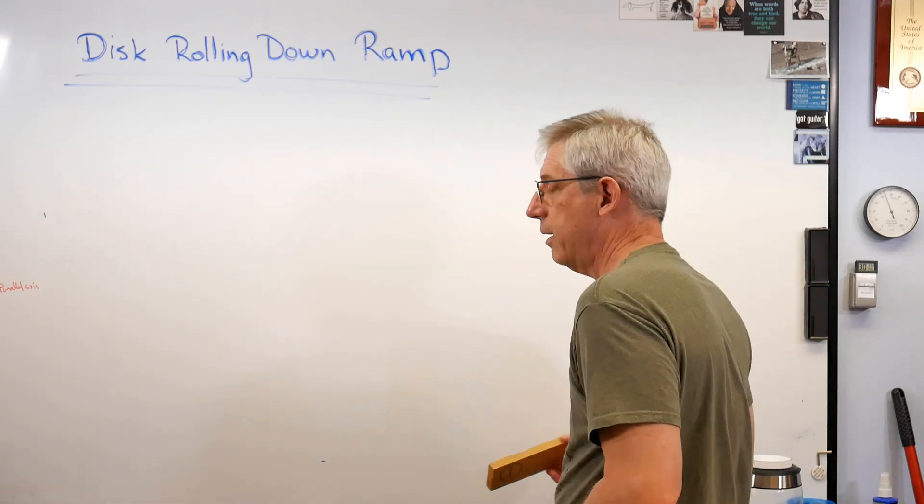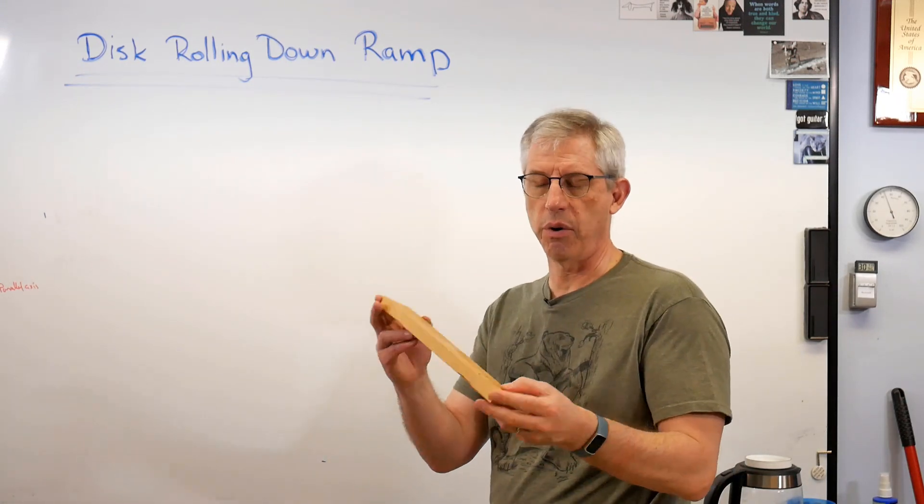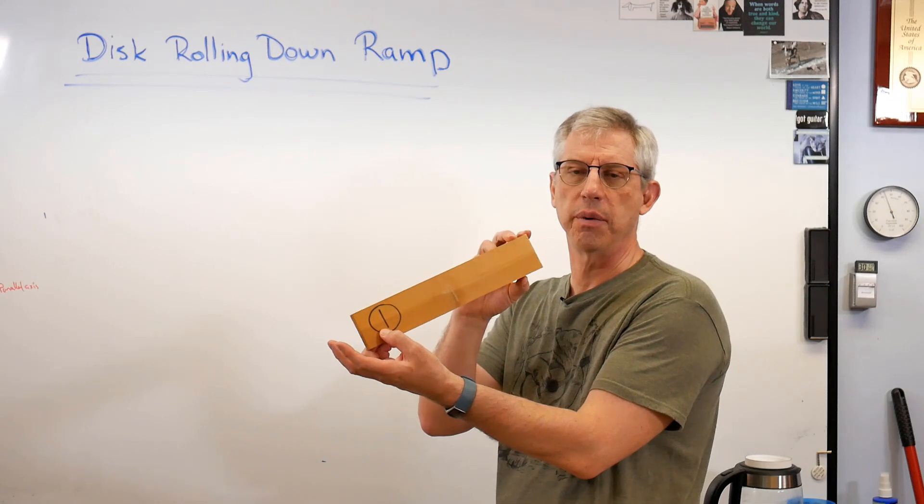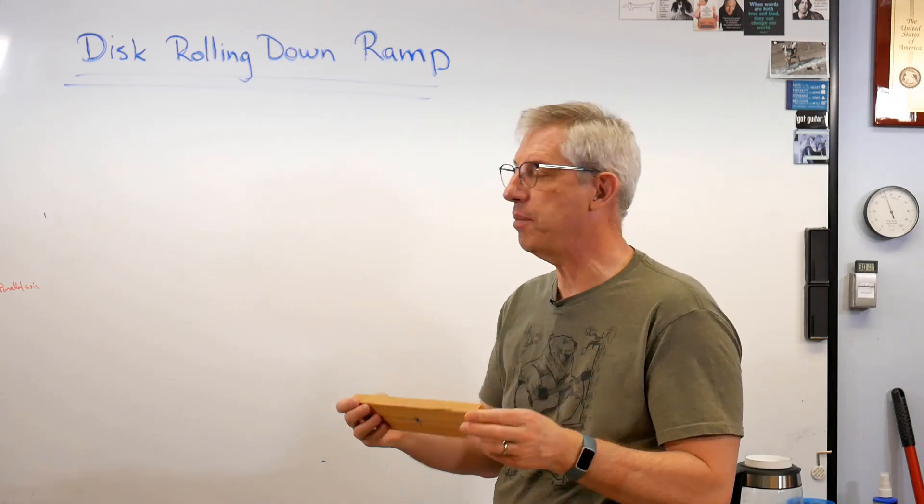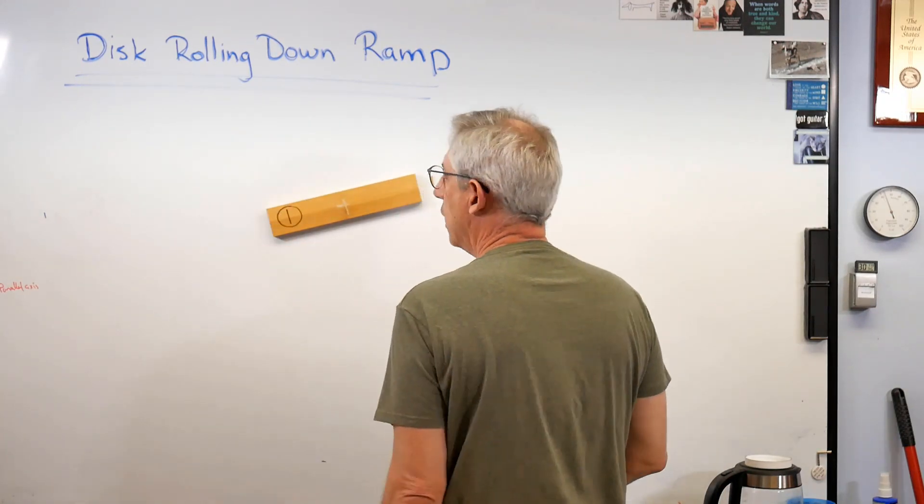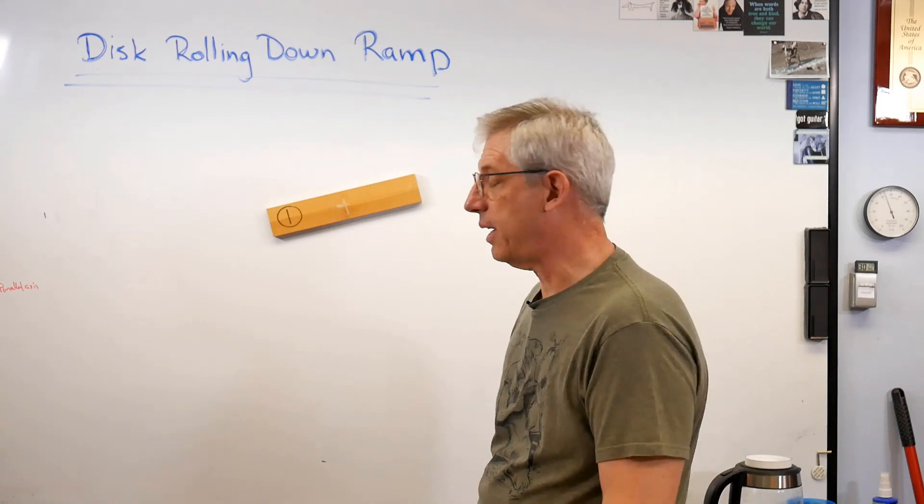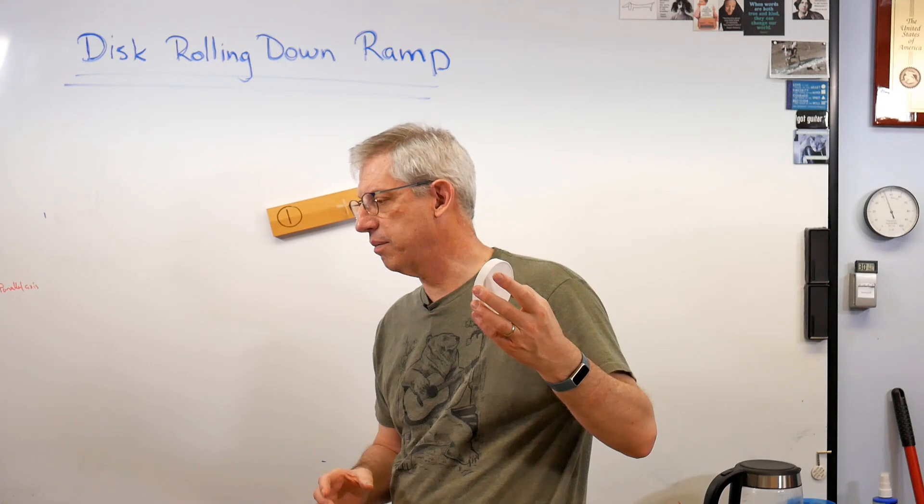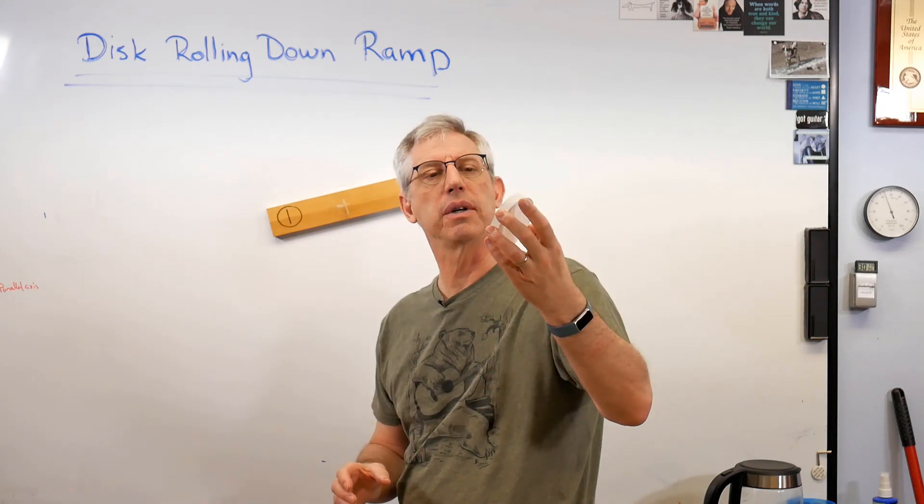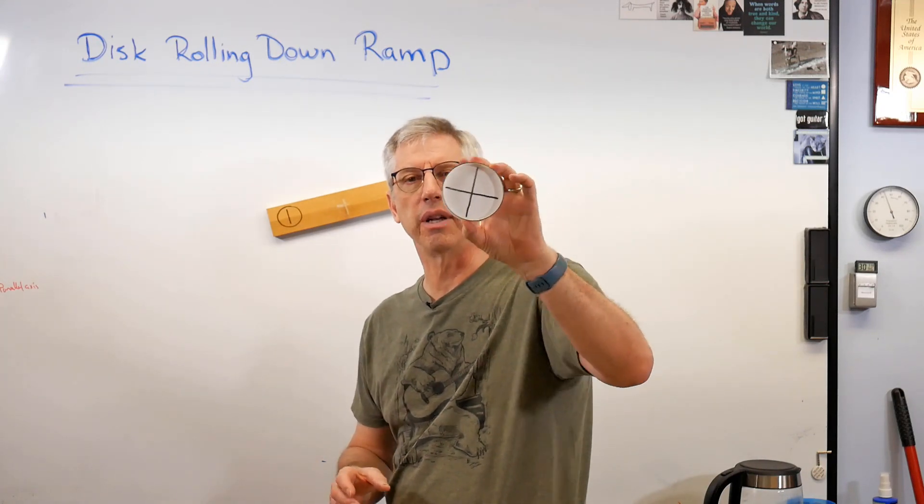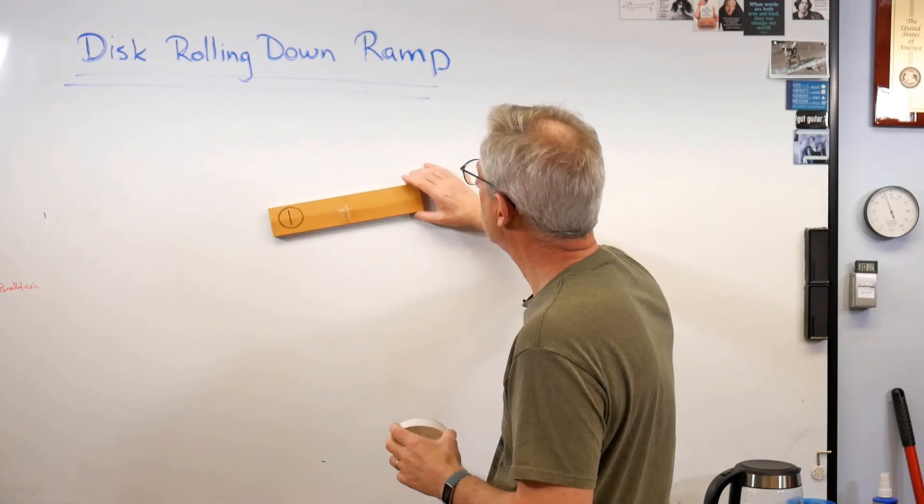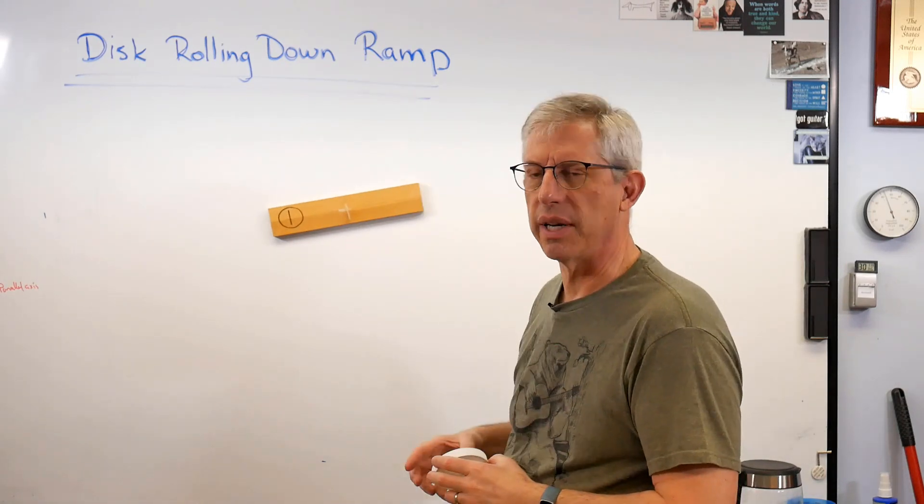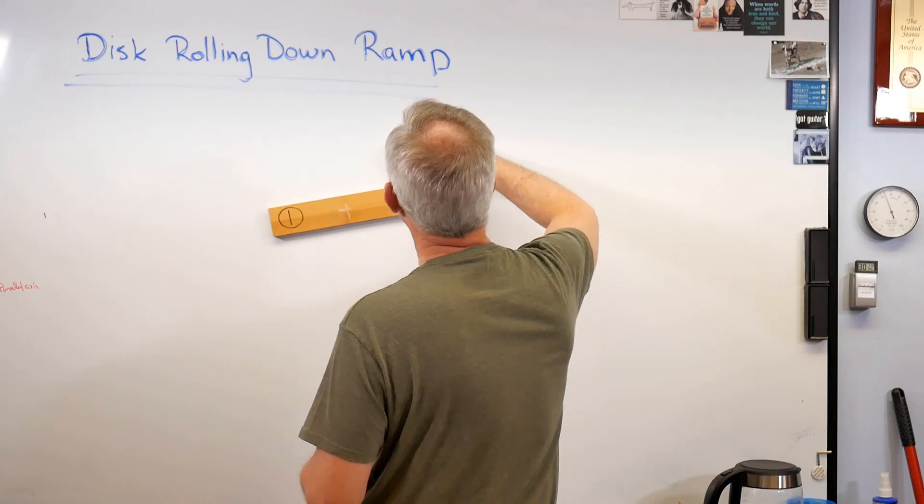I've got a little block here with magnets on the back of it. I'm just going to stick this right there. Next thing I need is a disc. I found the lid for a cup over here and I drew a black X on it and outlined the rim, so hopefully you'll be able to see this. So low angle there, I don't know, 10 degrees, something like that.